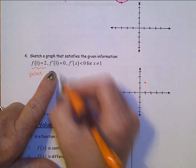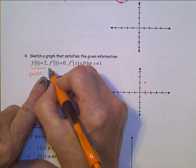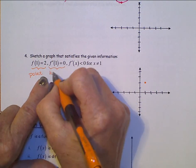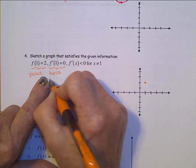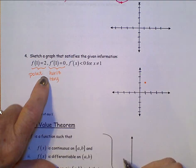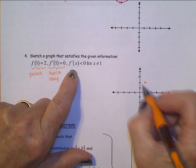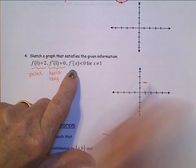f prime at one is equal to zero. That's a horizontal tangent. And let's put that in. Little baby horizontal tangent there.